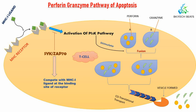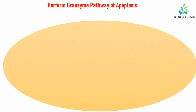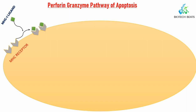Now we will discuss the mechanism behind the perforin-granzyme pathway. When studying a mechanism we should look at the domain structure of the protein or enzyme involved. Suppose we have a cytotoxic T cell (CTL) containing an MHC receptor — a major histocompatibility receptor. Whenever an MHC class I ligand binds with the MHC receptor, it will activate the PI3K pathway.